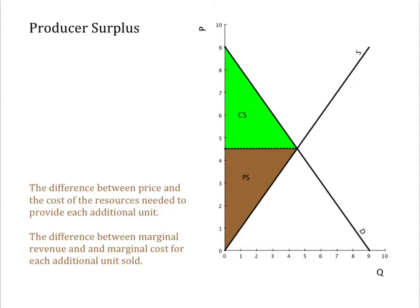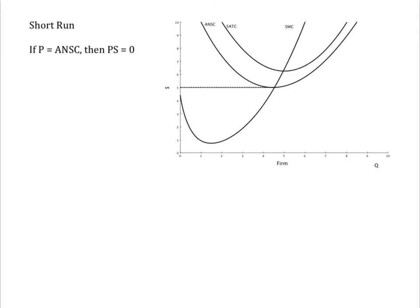Let's apply that definition in the short and long runs. If the market price falls to the shutdown point — the point where price equals average non-sunk, that is, avoidable costs — then there is no producer surplus. The firm produces nothing, no additional resources are used, no revenue comes in, and all costs endured by the seller are sunk.